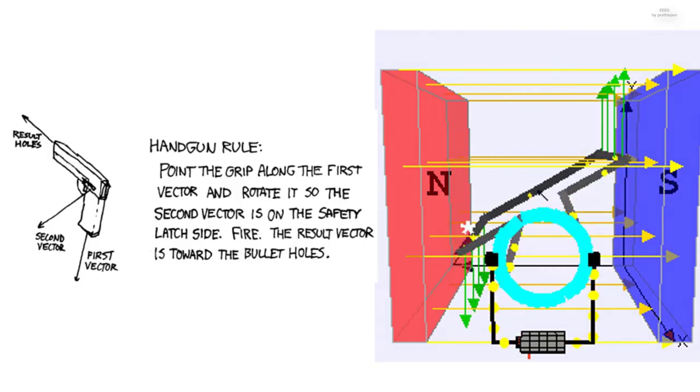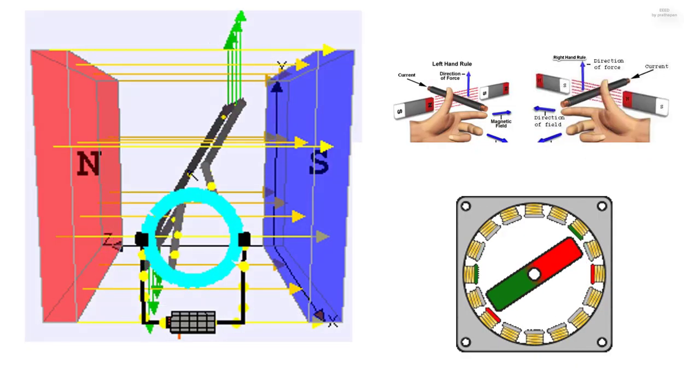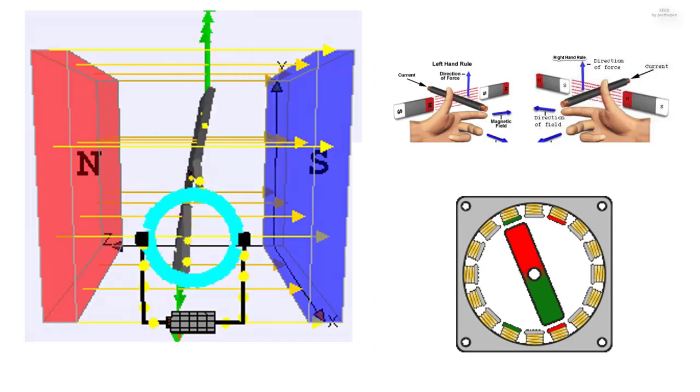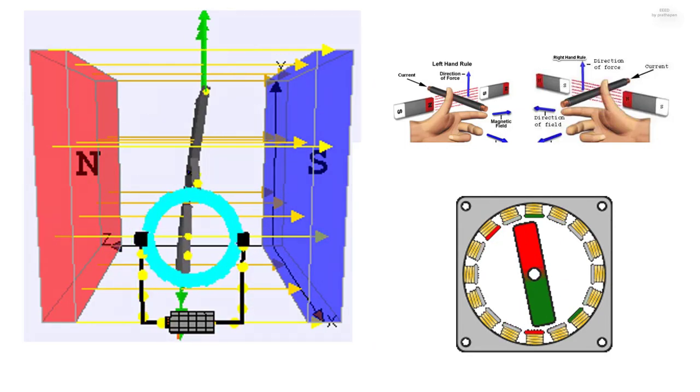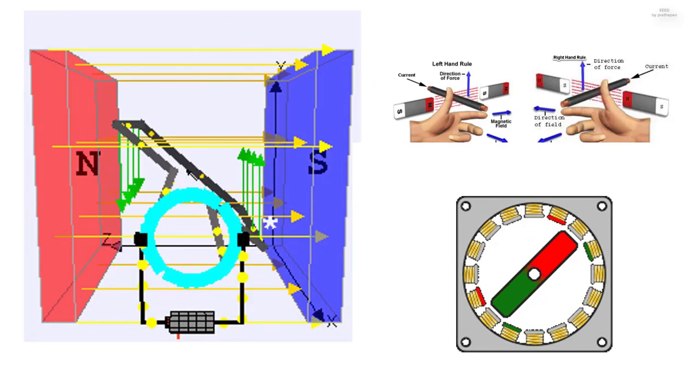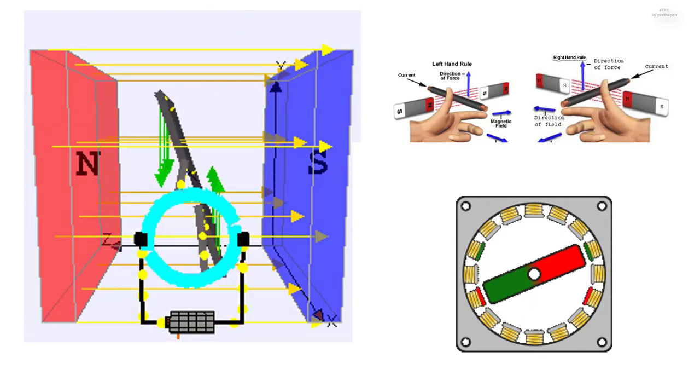Distinction between the right hand and left hand rule: Fleming's left hand rule is used for electric motors, while Fleming's right hand rule is used for electric generators.